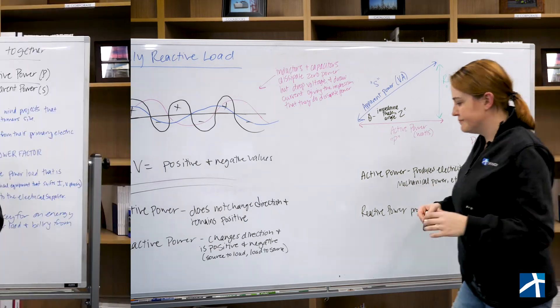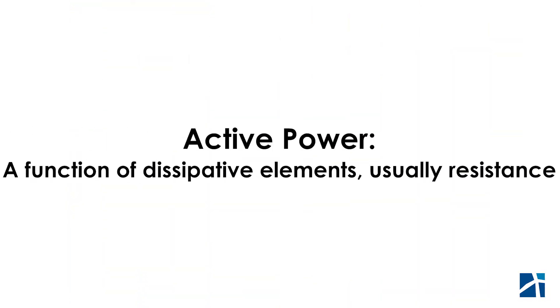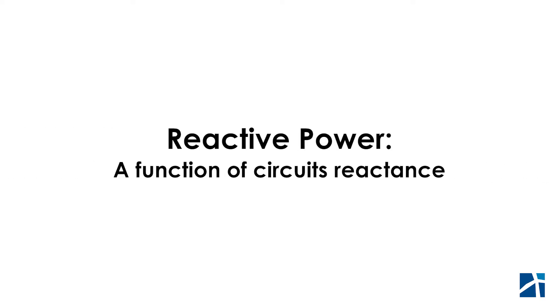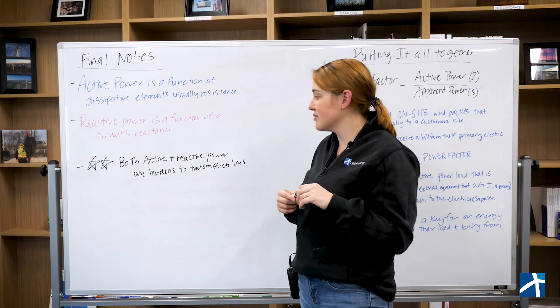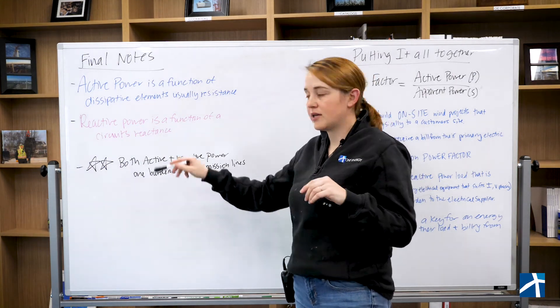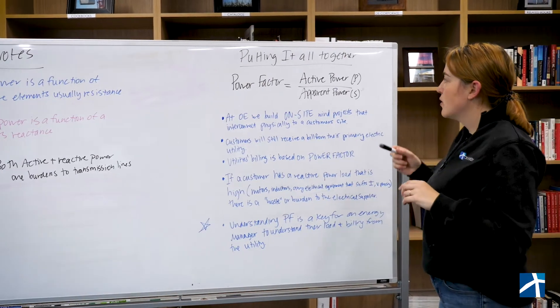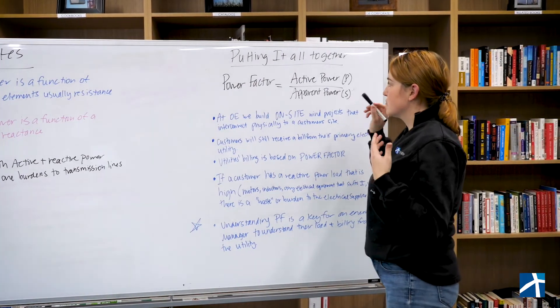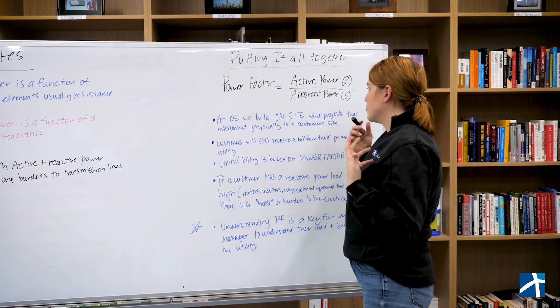Cool. So moving on. So putting all this together, some final notes here, active power is a function of dissipative elements, usually resistance. Reactive power is a function of circuits reactants. Both active and reactive power are burdens to transmission lines. That's pretty key here. And that's going to be one of the big takeaways. So to put all this together, what really matters is the ratio of active power to apparent power or the ratio of reactive power to apparent power.